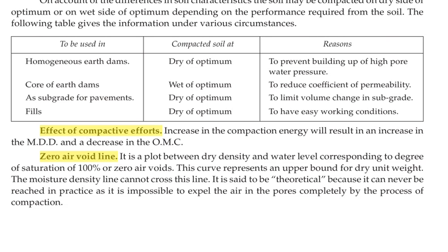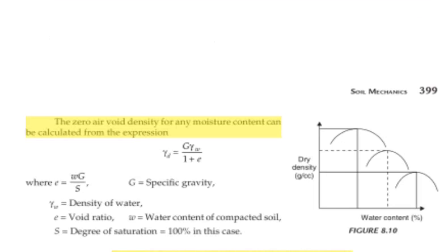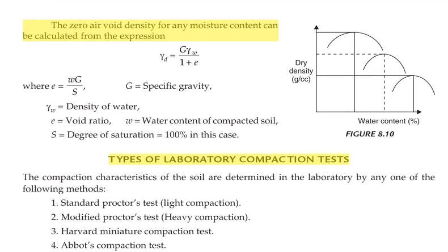Next, the Zero Air Voids (ZAV) line is a very important concept. It is a plot between dry density and water content corresponding to a degree of saturation of 100%, i.e., zero air voids. This curve represents an upper bound for dry unit weight, and the moisture-density line cannot cross this line. It is theoretical because it can never be reached in practice, as it is impossible to expel all air from the pores by compaction. The ZAV dry density can be calculated as: γd = G·ρw / (1 + e), where e = wG/S, G is specific gravity, e is void ratio, γw is density of water, and S is the degree of saturation equal to 100%.